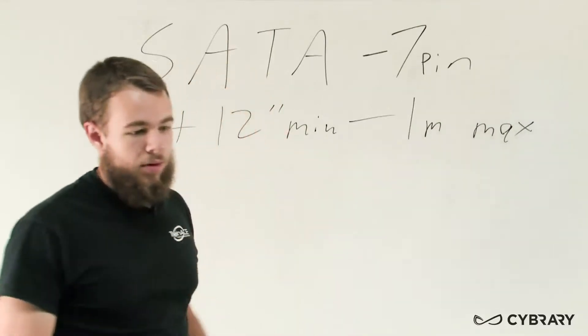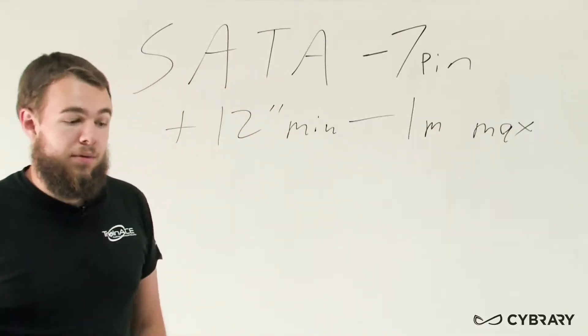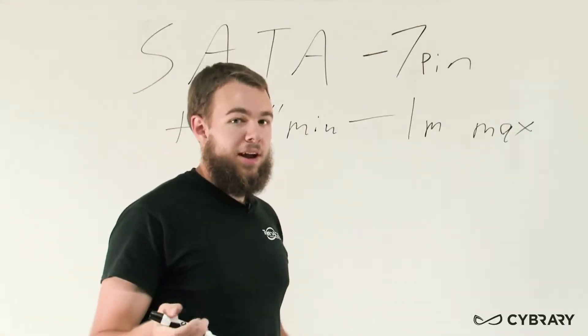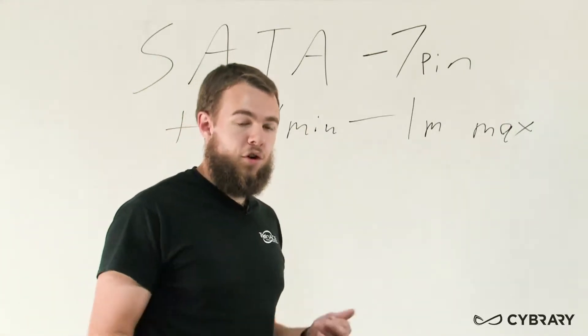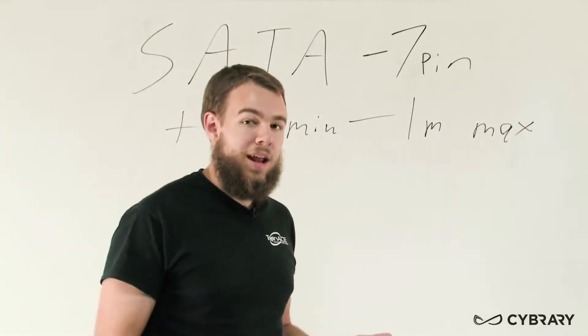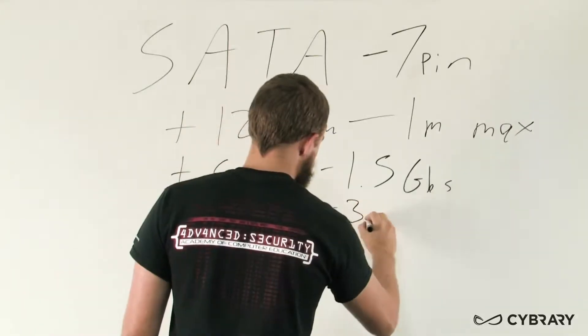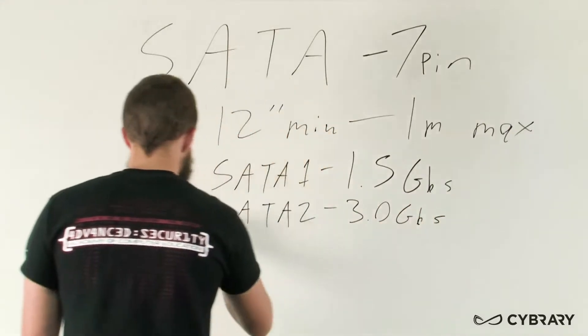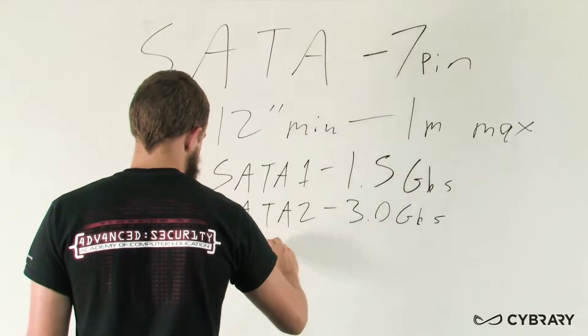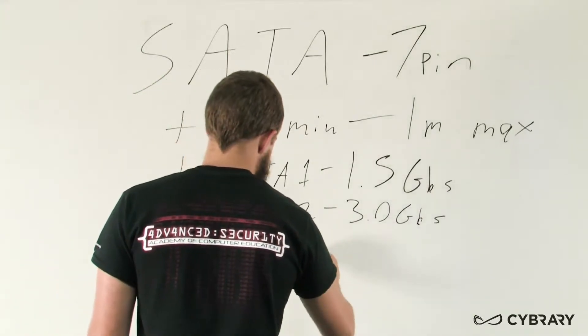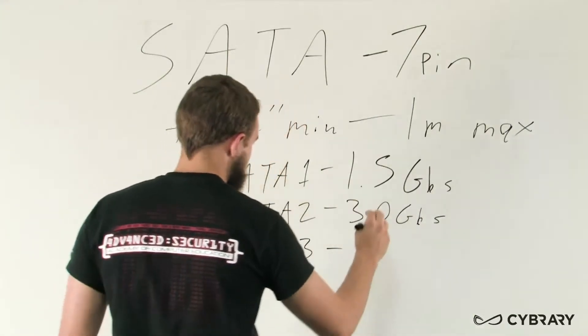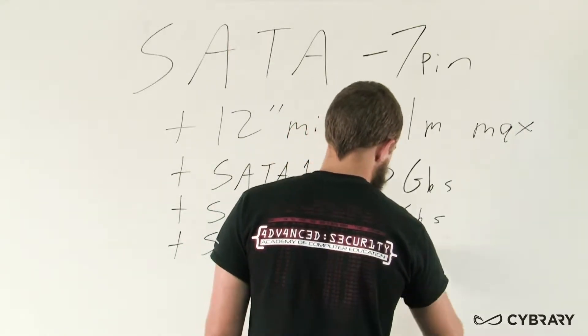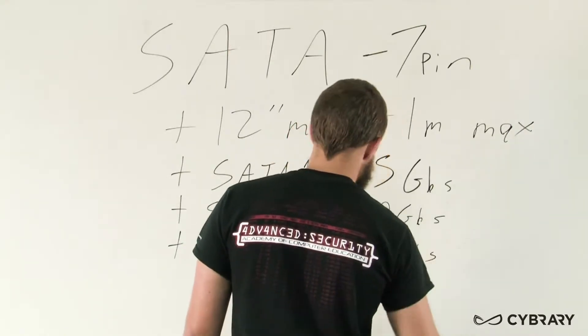SATA cables come in different versions for different speeds. The connector is the same on all versions, but the versions specify what data rate they can transfer at. SATA 1 transfers at about 1.5 gigabits per second, SATA 2 at 3.0 gigabits per second, and SATA 3, double the transfer of SATA 2, at 6.0 gigabits per second.